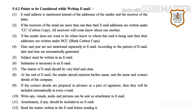Points to be considered while writing an email. Point 1: Email addresses are mentioned instead of the addresses of the sender and the receiver. Point 2: If the receivers of the email are more than one, then their email addresses are written under CC, Carbon Copy, and all receivers will come to know about one another. Point 3: If the sender does not want to let others know to whom this mail is being sent, then their addresses are written under BCC.